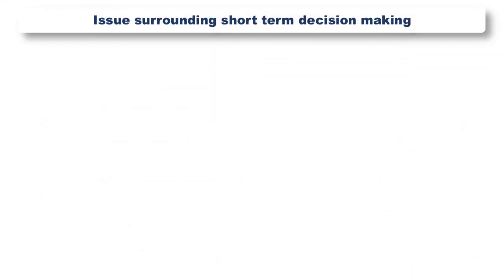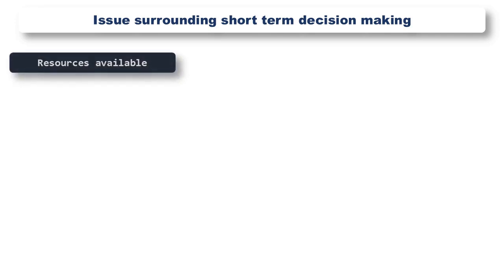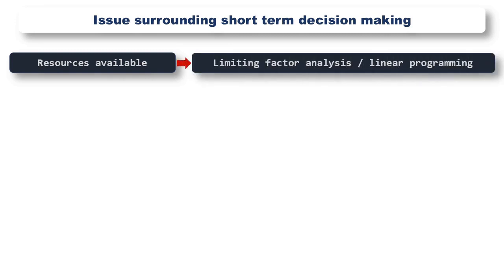Before we have a look at any techniques for dealing with these sorts of decisions, let's first of all consider the issues surrounding short-term decision making. The first thing we need to consider is the resources available to us, and whether there is any restriction on any of those resources. Where there are restrictions, we can of course use limiting factor analysis or linear programming to help us ensure that we make the best use of our scarce resources, to maximise contribution and therefore profit.